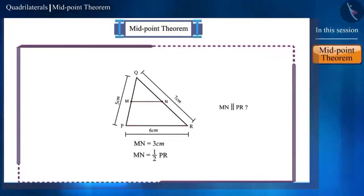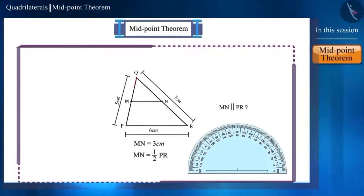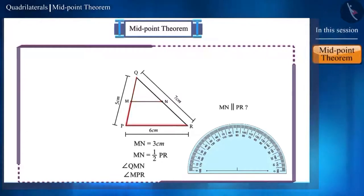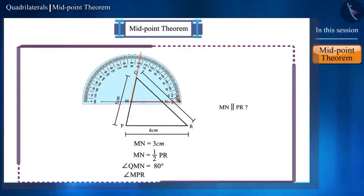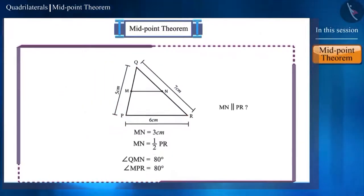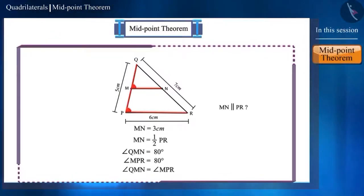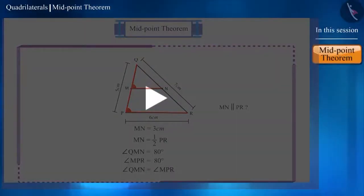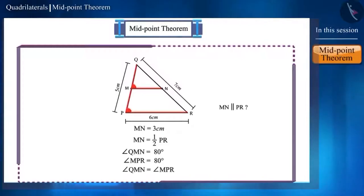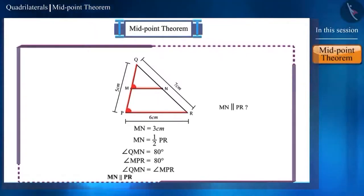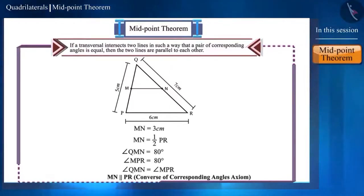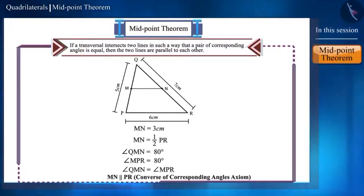We can test this. Let us find the measurement of the angles, that is, angle QMN and angle MPR with the help of a protractor. The measurement of these two angles is equal. We know that these two angles are corresponding angles formed by the intersection of the line segments MN and PR with the transversal PQ. If we use the converse of the corresponding angles axiom here, then we can say that the line segment MN and side PR are parallel.